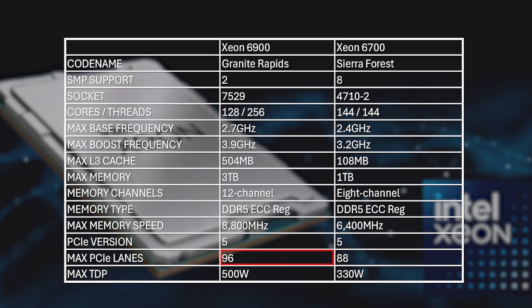Moving on, Xeon 6900 have 96 PCIe 5 lanes each, while Xeon 6700 have 88 each. There are also big differences in the memory controllers too, with Xeon 6900 supporting up to 3 terabytes of 12-channel DDR5, while Xeon 6700 only support 1 terabyte of 8-channel DDR5.